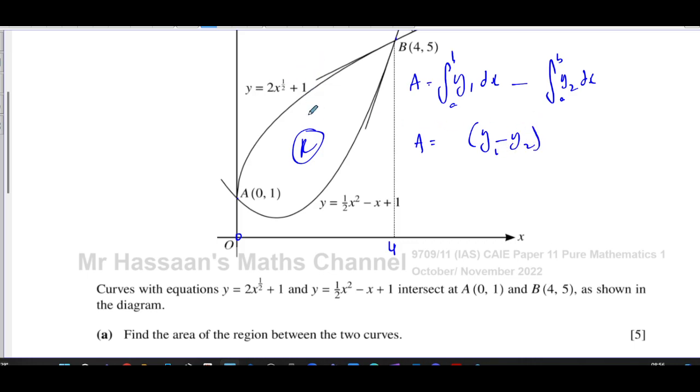Alternatively, what we could do is actually subtract the two equations, keeping the equation on top first, and integrate that with respect to x between the same two limits. That will give us the same answer. Some people prefer to do this, some prefer to do that; both are fine.